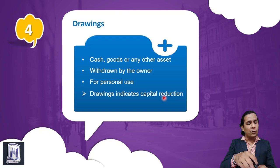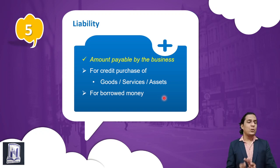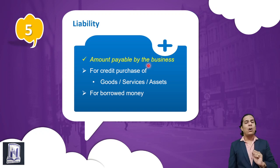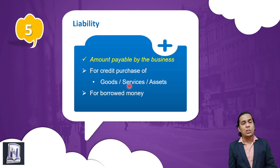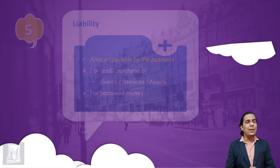The owner gives money to the business as capital and takes it back, so ultimately capital gets reduced. Next is a very easy word: 'liability.' Liability ka similar hai responsibility — yani karza. Liability arises when you purchase goods, services, or assets on credit, or whenever you borrow money — for example, taking a loan from a bank.